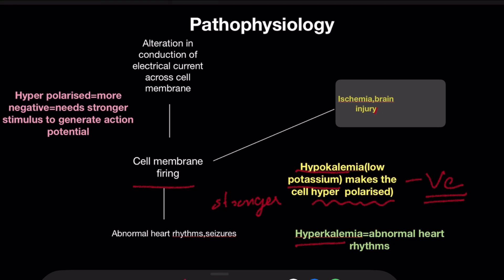On the other hand, hyperkalemia increases positive charge, since potassium carries a positive charge. As a result of hyperkalemia, the cell membrane becomes more positive — that is, the cells become hypopolarized. These hypopolarized cells need only a weaker stimulus; even with a weaker stimulus, the cells generate action potentials. So as a result of hyperkalemia, abnormal heart rhythms occur, and in cases of brain involvement, it can result in seizures.